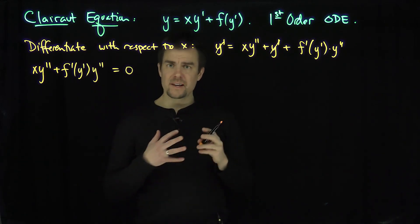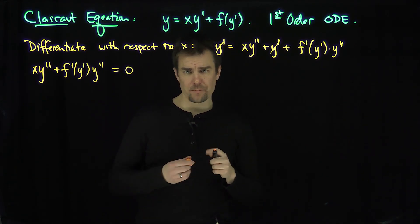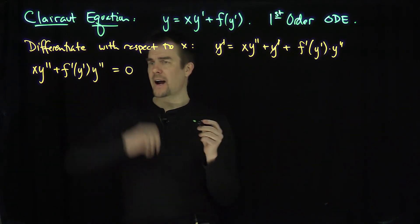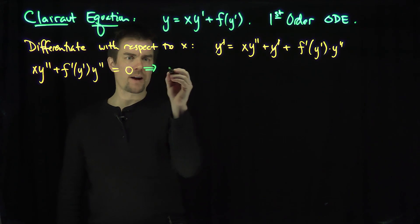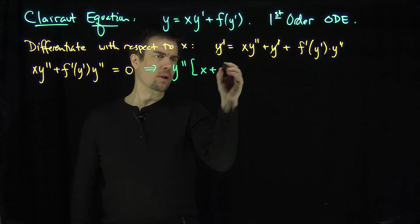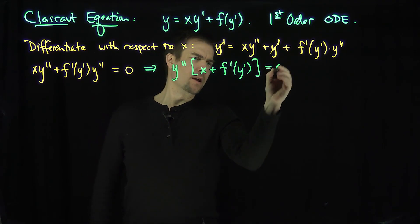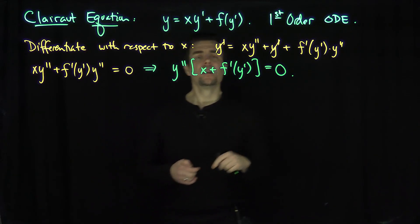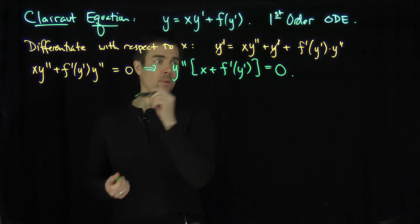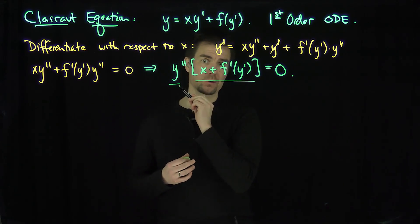The observation that Clairaut made is that the y' terms on both sides of the equation cancel, and what we have is x times y'' plus f' of y' times y'' equals 0. We took the first-order differential equation and turned it into a second-order differential equation. We can factor this as y'' times (x plus f' of y') equals 0.